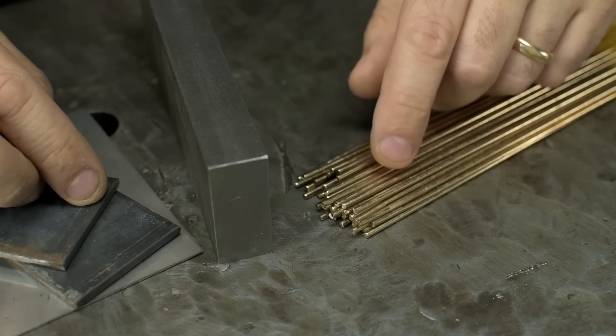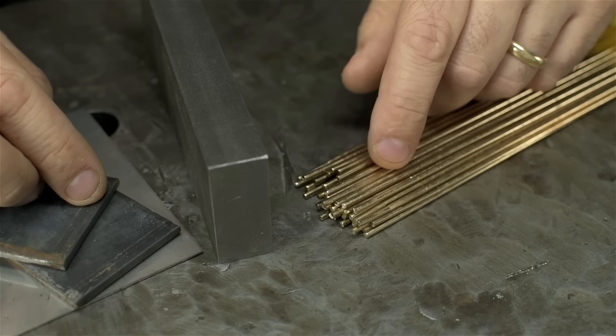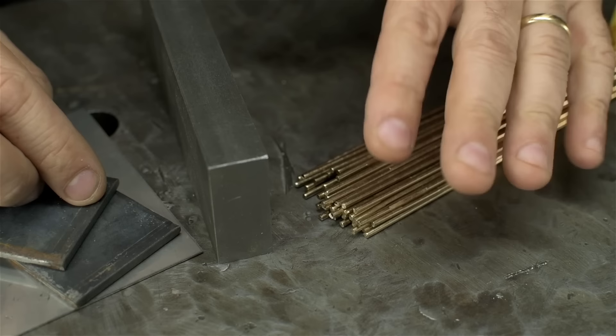But just like marriage counseling, there are some compromises if it's going to work. Silicon bronze is now what's holding the parts together. Like hot glue. The strength of the metal isn't technically as strong. Not by much. But it's not as strong.